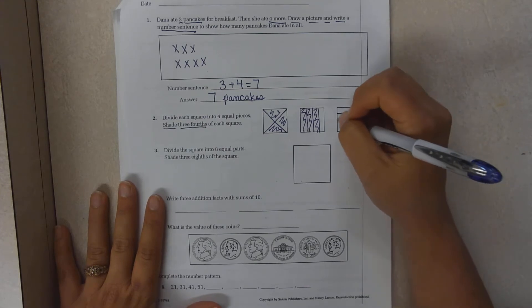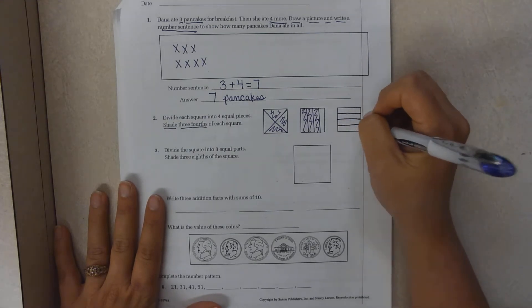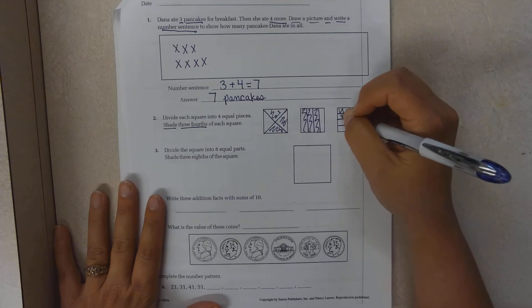Another way you can do it is this way. One fourth, two fourths, three fourths.